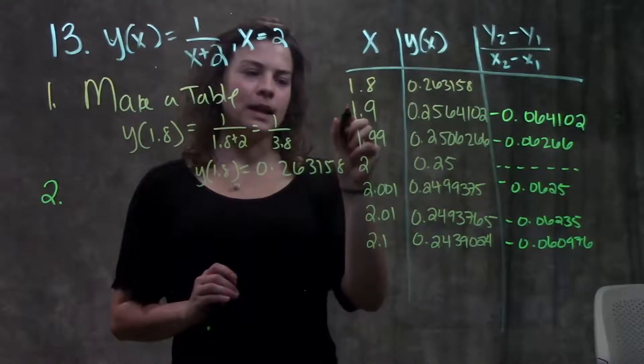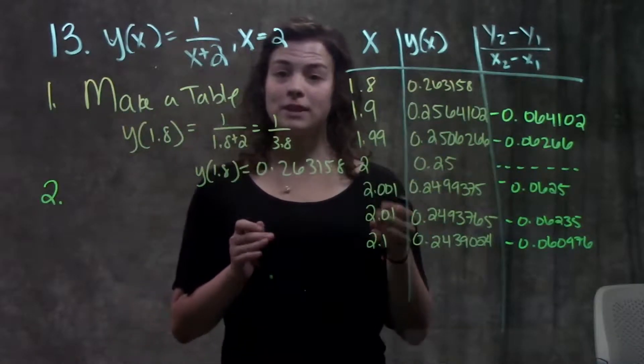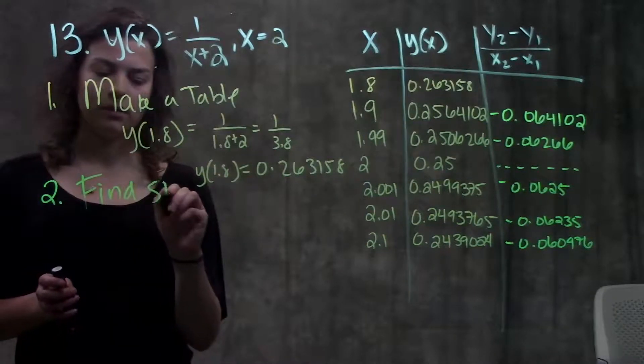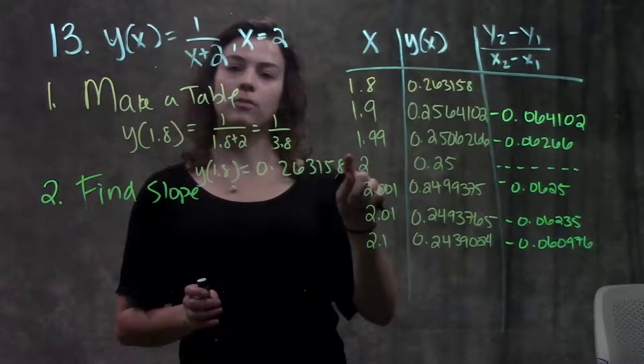And you go ahead, go through, plug in each x value into your function, see what comes up for y. All right, once you've finished your table, then you go to step two. Step two is find the slope, and you want to find the slope between each x value that we plugged in and our point of interest.